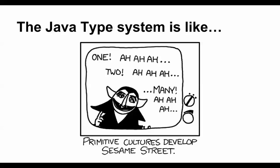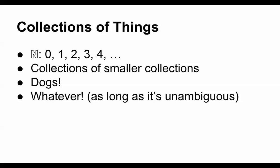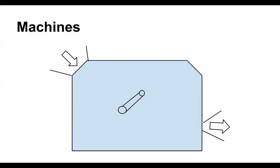There are three ideas I needed to build for myself when learning type theory. The first idea is you have collections of things — collections of numbers, collections of other collections, collections of dogs, whatever you want — as long as it's unambiguous.